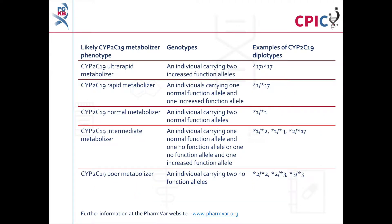There are currently 34 defined alleles of CYP2C19, known as star alleles. Star alleles are characterised by their rate of function relative to the star 1 allele, which is designated as a normal function allele. Diplotypes of CYP2C19 star alleles can be assigned to a metaboliser phenotype, as shown in this table and in Table 1 of the guideline.